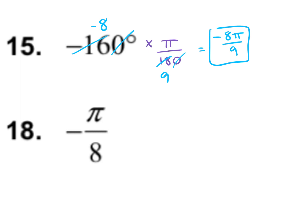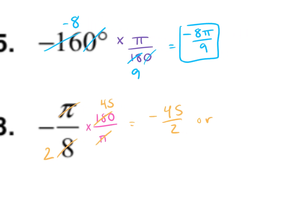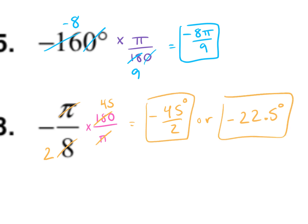For number 18, to convert radians to degrees, multiply by 180 over π — the π's cancel. What number goes into both 8 and 180? 4. Dividing gives us 2 and 45, so the answer is negative 45 over 2, which is negative 22.5 degrees. Either form works, but make sure to include the degree sign.